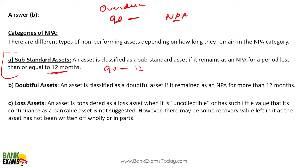From 3 months to 12 months, it is a substandard asset. An asset is classified as substandard if it remains NPA for a period of less than or equal to 12 months. After that it becomes a doubtful asset. Then, when a bank considers a debt uncollectable — when they believe the money cannot be recovered — it becomes a loss asset.